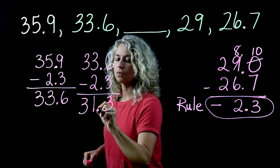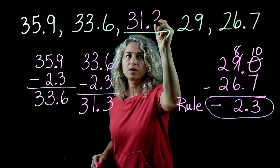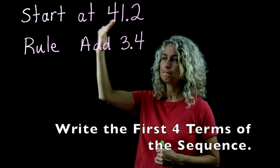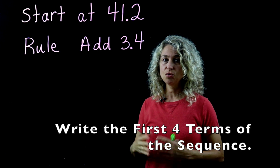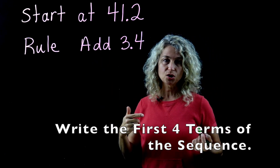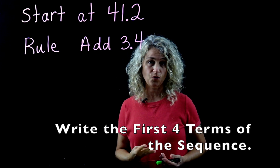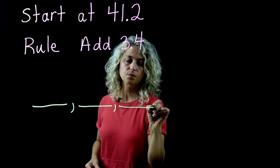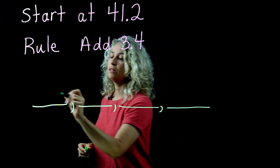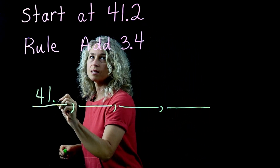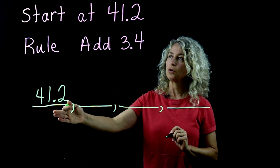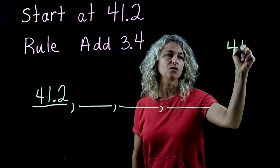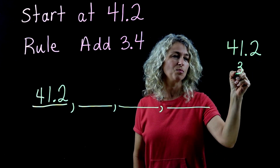So we can fill in 31.3 as our missing term. Now, when you're given a starting point and a rule, you just begin the pattern. The question asks us to complete the first four terms, so we draw four blanks. We fill in the first number, 41.2, because that's where it begins — that's our first term. Now we apply the rule of add 3.4: 41.2 plus 3.4.